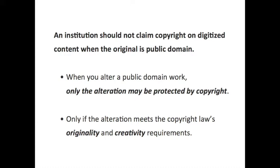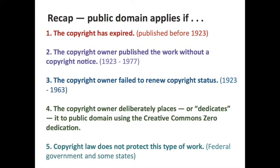To recap the five ways content enters the public domain: copyright has expired — published work before 1923; the copyright owner published the work without a copyright notice — published work between 1923 and 1977; the copyright owner failed to renew copyright status — published work 1923 to 1963, but you have to do a little research; the copyright owner deliberately places it in the public domain using CC0; or copyright law never protected this type of work — federal government and some states.